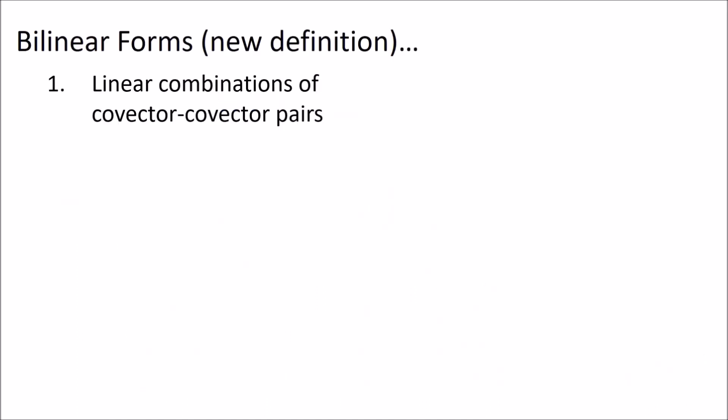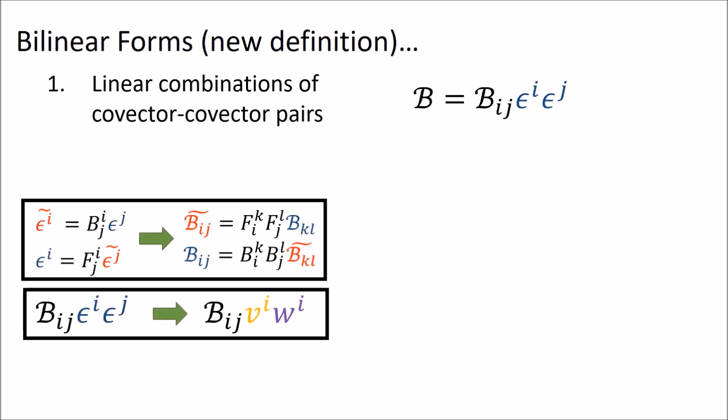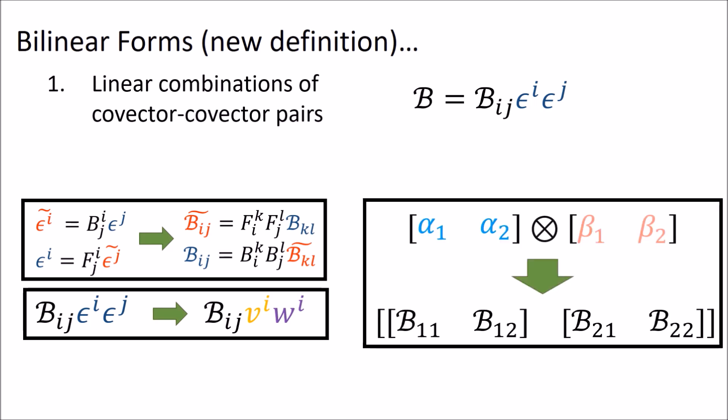To summarize what we learned in this video: we can write bilinear forms as linear combinations of covector-covector pairs, and this immediately gives us the transformation rules, the component multiplication formula, and the correct array shape, all for free.